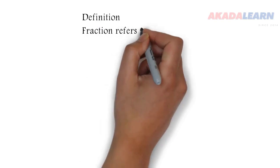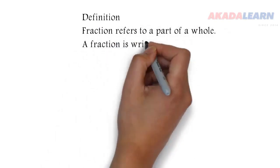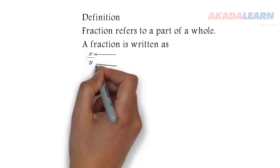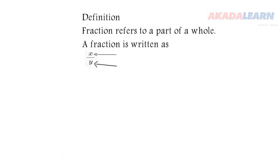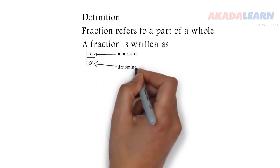We'll start with definition of a fraction. Fraction simply refers to a part of a whole. And this is the way we write fraction: x over y. The x, which is the number on top of the line, is called numerator. While the y, which is the number below the line, is called denominator.